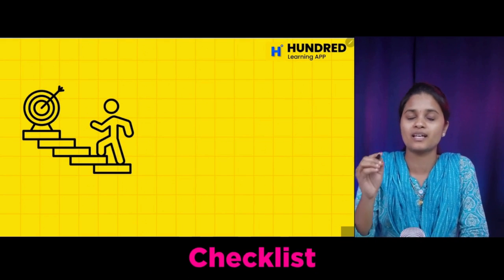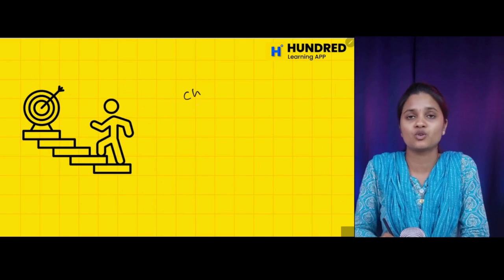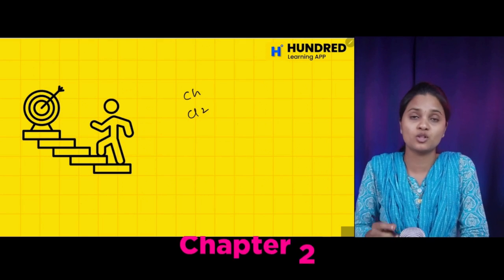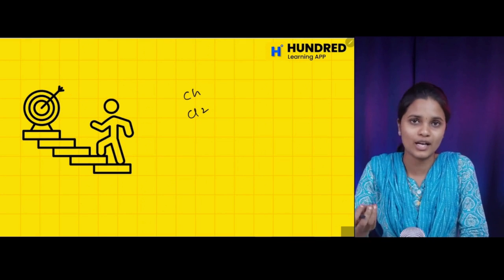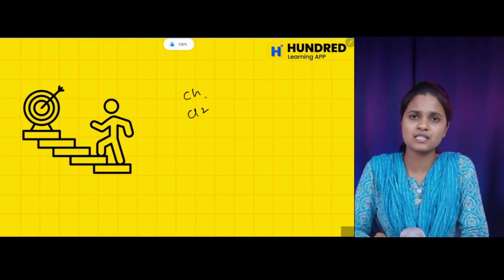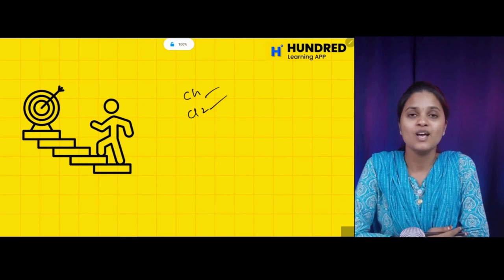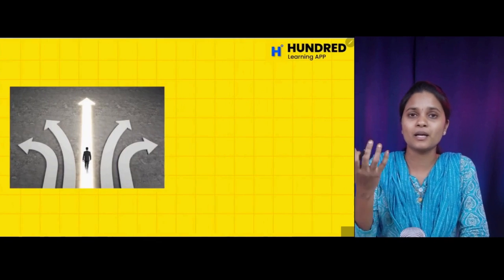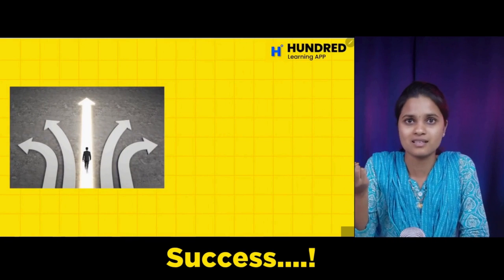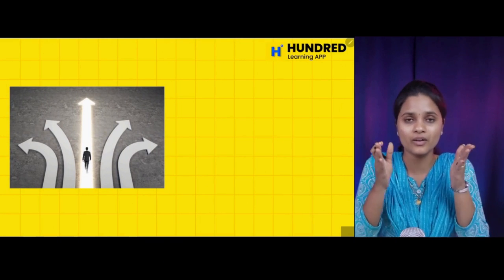We will complete chapter 1, chapter 2 — like that, you will complete a checklist and you will finish it. So if you are doing it, we can achieve success. Fix it that way.